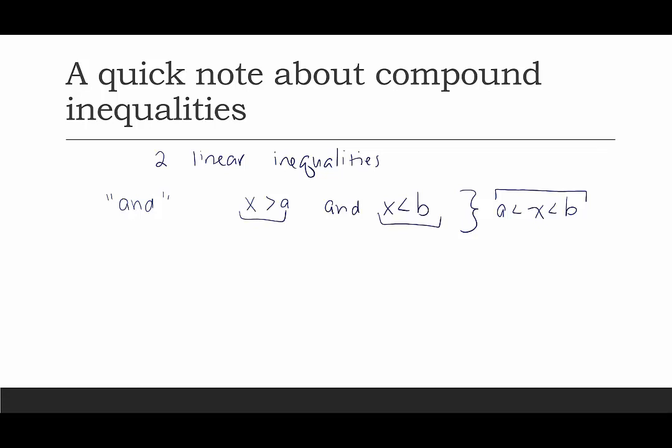The other type of compound inequality is a disjunction, which uses the word OR. This would say X is less than A or X is greater than B. With the OR, there is no single compound inequality — we cannot combine them because that would imply B is less than A. So with OR you will always see two separate inequalities. Solve each one separately and you'll have your solution sets. These should always be two separate intervals going off to the left and to the right with no overlap. Like in the restaurant example — if you're less than 12 or 65 and over, you can't be both.